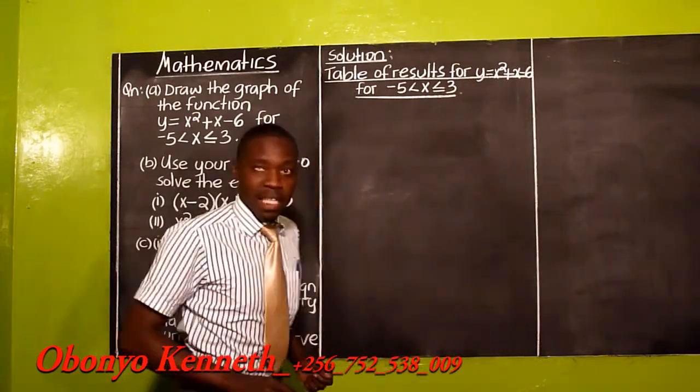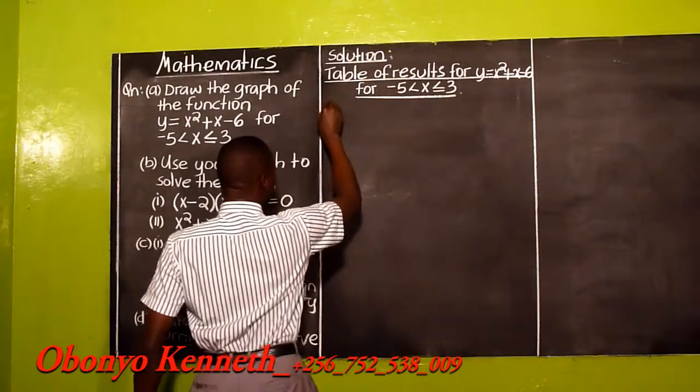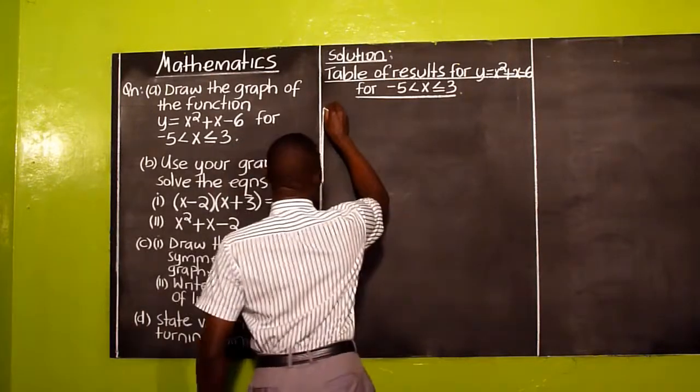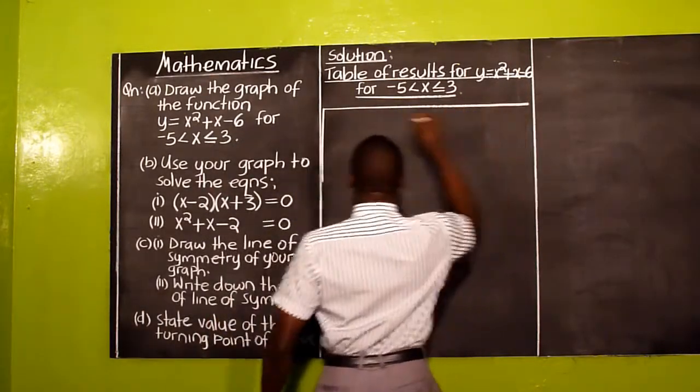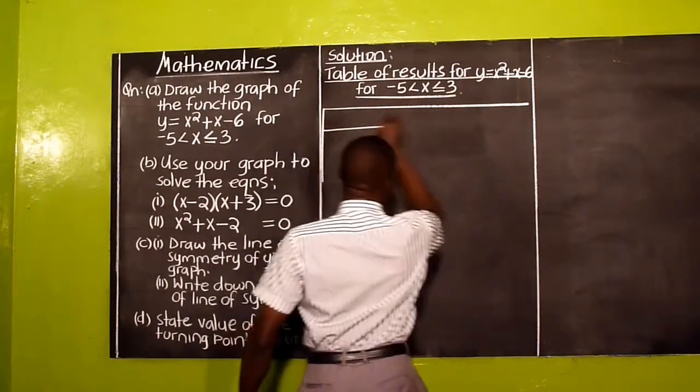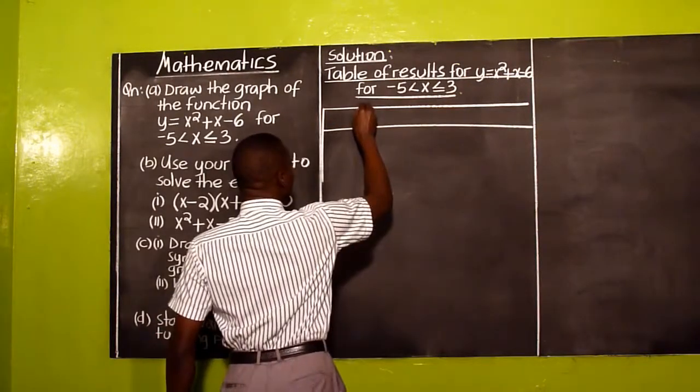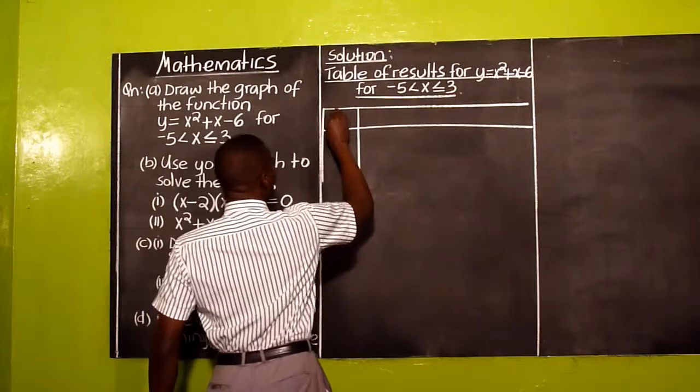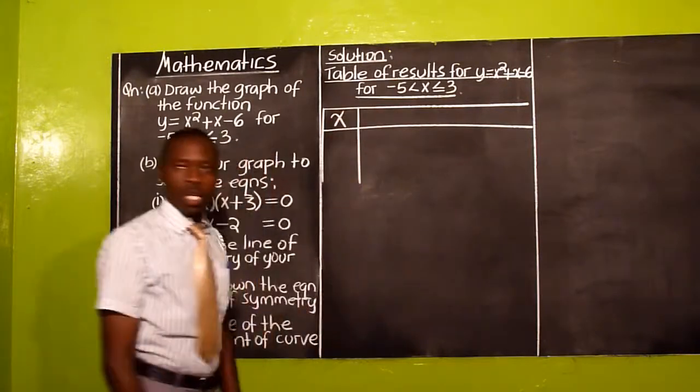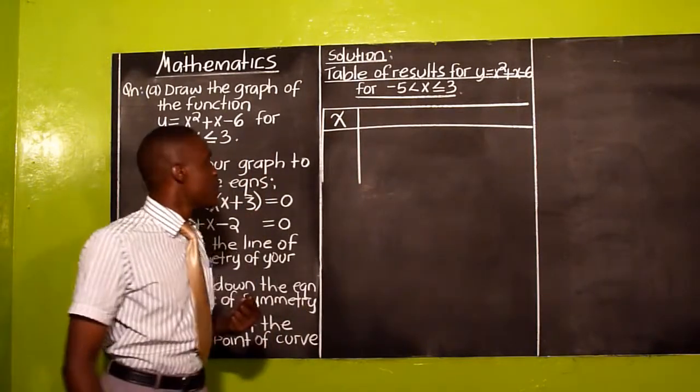That would mean that we need to draw our table of results. So in our table of results, we start with our X value. But our X values, remember...